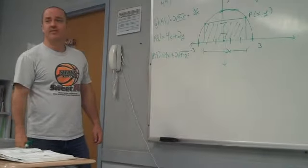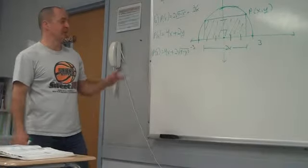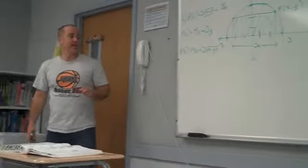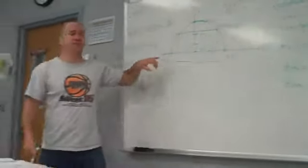So 4x plus 2 root 9 minus x squared would be correct. But wouldn't you square that because... Oh, no, you could do it. This is perimeter, not area. Yeah. Okay? So here's how you express the area. Here's how you express the perimeter.